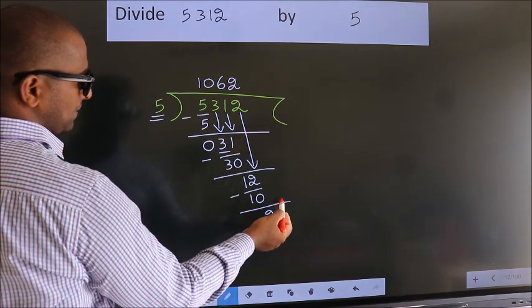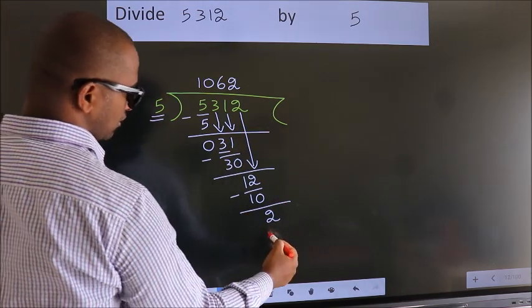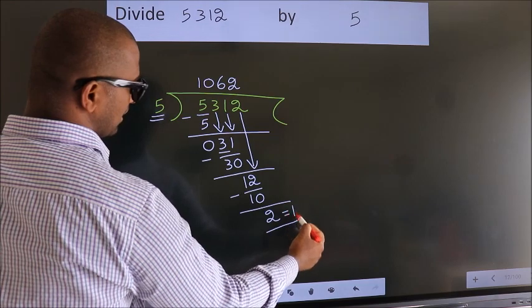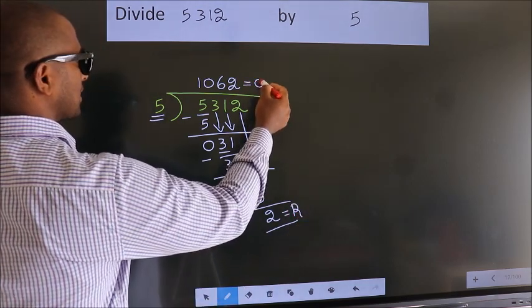No more numbers to bring down, so we stop here. This is our remainder. This is our quotient.